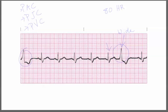Because it's wide and it looks completely different from the other QRS complexes, this means that it's coming from the ventricles. We also want to double check and make sure that we don't have a P wave — there is no P wave, and there is not. So this is definitely a premature ventricular contraction.